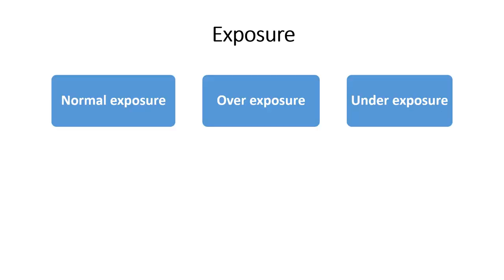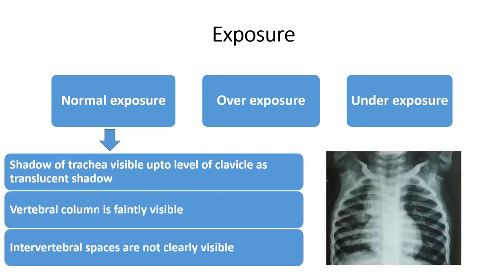After that, about exposure. Whenever we read the X-ray, we should determine if it is normal exposure, underexposure, or overexposure. With normal exposure, the shadow of the trachea will be visible up to the level of the clavicle as a translucent shadow. You can see the shadow of the trachea visible up to the level of the clavicle. The vertebral column is faintly visible in normal exposure — not very clearly visible, and intervertebral spaces are also not clearly visible.